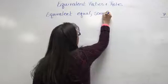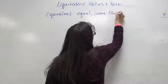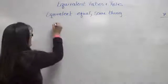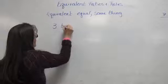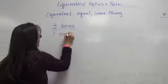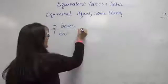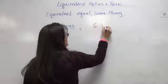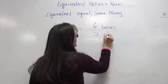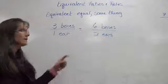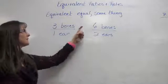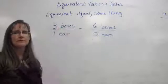They are the same thing. So if I told you that I had three bones in one ear, that would be the same thing as saying that I have six bones in two ears. The reason that works is if I double the amount of ears, it should make sense that I would have to double the amount of bones.